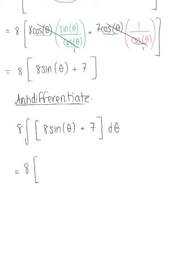This leaves us with 8 multiplied by negative 8 cosine of theta plus 7 theta. We can simplify this to negative 64 cosine of theta plus 56 theta.